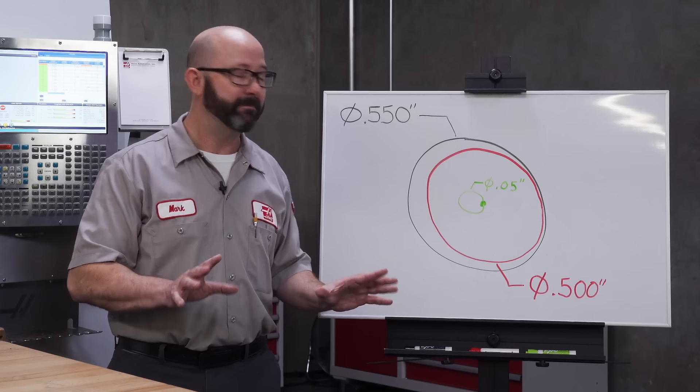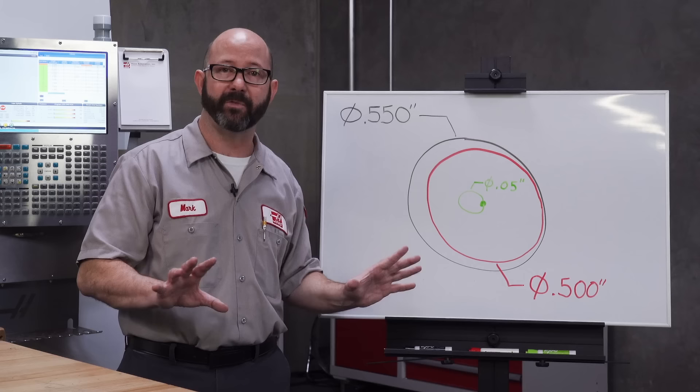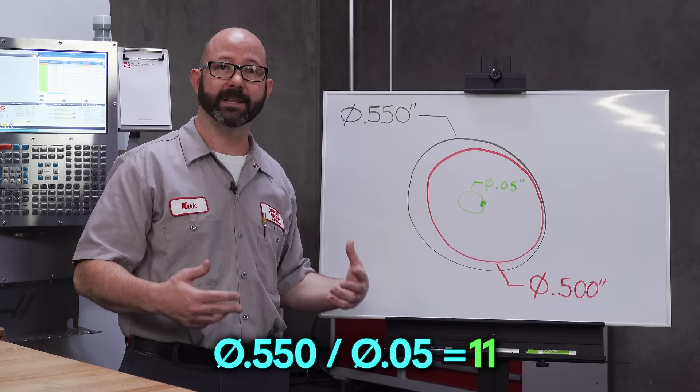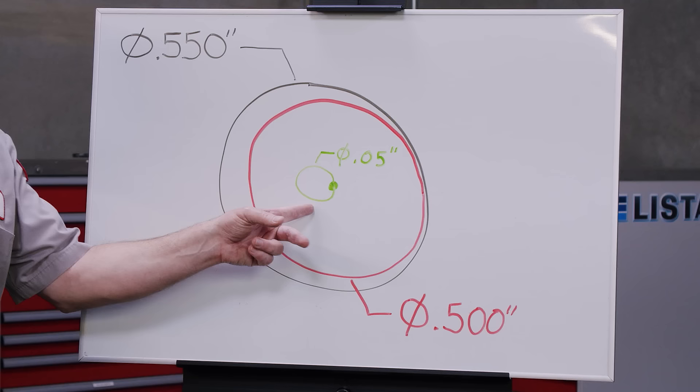But that's at the center of our tool. Out here at the edge of our tool, where we're at the 550 diameter, things are moving much faster. 11 times faster, because 550 divided by 50 equals 11, 11 times. This outer circle is 11 times bigger than the inside circle that our feed rates are based on, and we haven't adjusted for that.